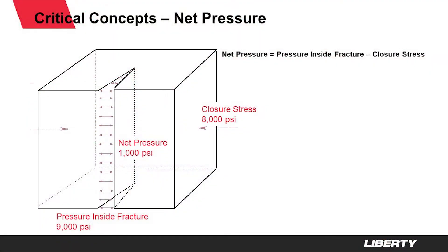The definition of net pressure is simply the difference of pressure inside the fracture minus the closure stress. In this example, the closure stress, or the least horizontal stress, is 8000 psi in a typical shale at a depth of 10,000 feet. If we measure the pressure inside the main body of the fracture to be 9000 psi, the net pressure equals the difference between these two, or 1000 psi.